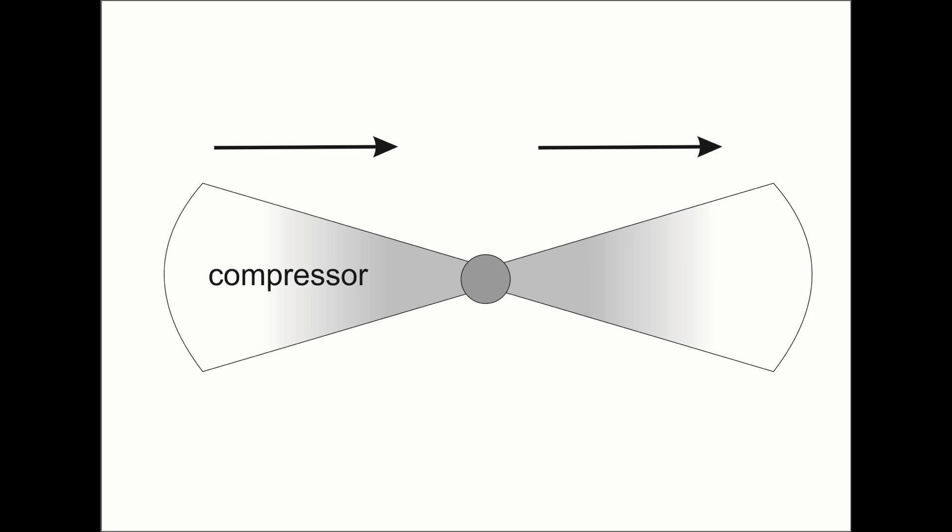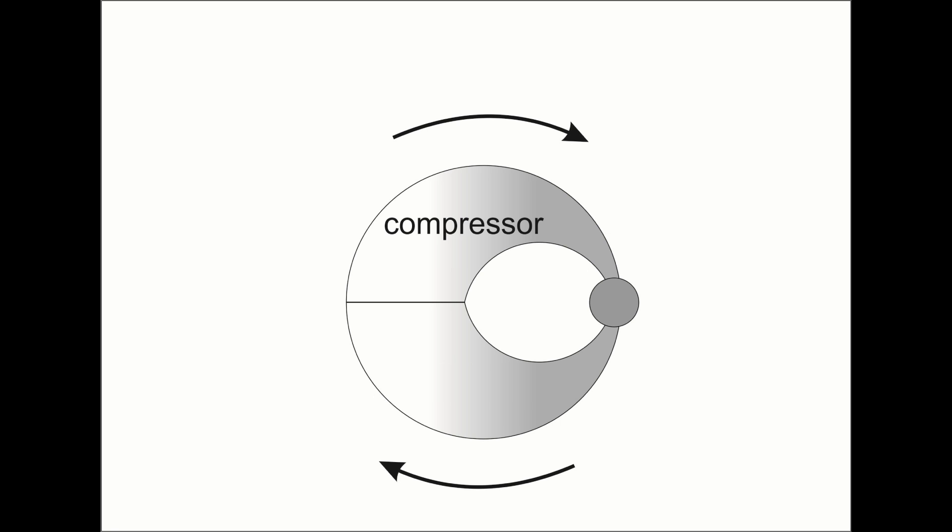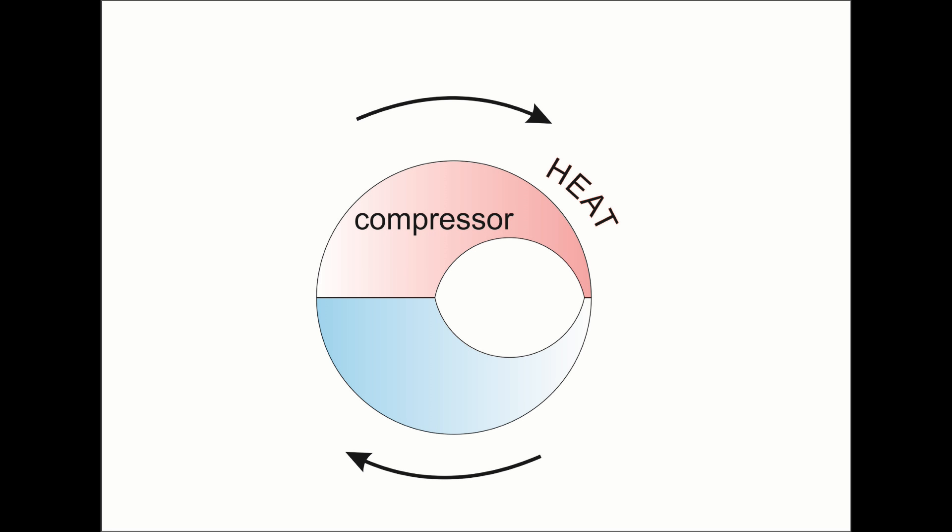The same gas goes round and round in a circuit. As the gas expands it collects heat from its surroundings, and as it's compressed it releases that heat again. So if you separate the expansion side from the compression side, you can collect heat from one place and move it to the other, just like a fridge but in reverse.